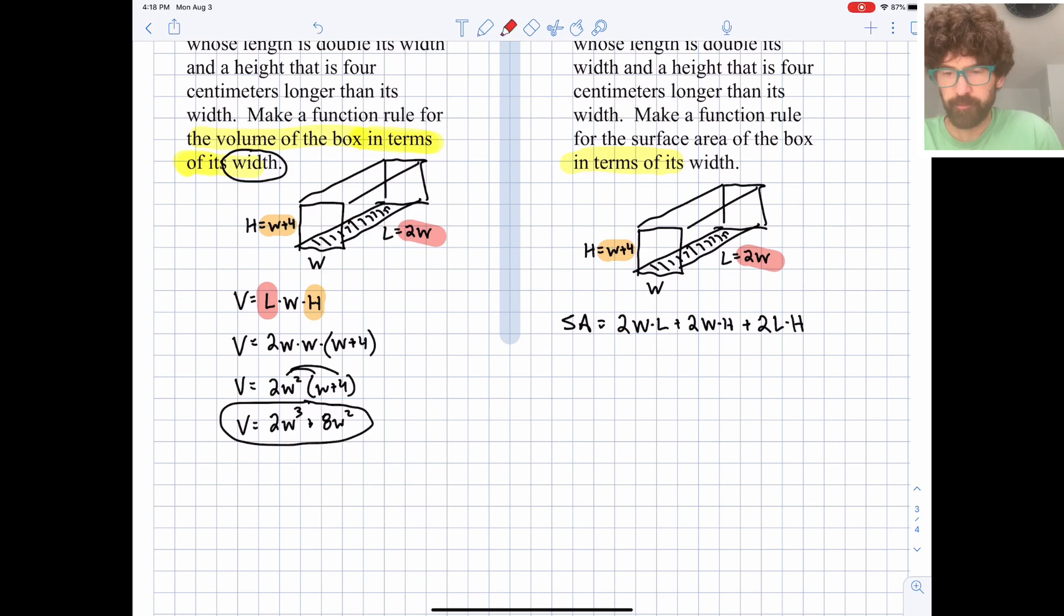So, we can color coordinate a little bit. Here is a length in red, and here is a height in orange, and widths will stay as widths. So surface area is going to be 2 widths times 2w, plus 2 widths times w plus 4, plus 2 of our lengths, which is 2w's, times the height, which is w plus 4. Okay? So we've got the equation all written out.